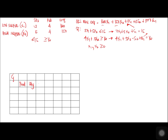For the first simplex table, the columns are Cj, Basis, Quantity, X1, X2, S1, S2, and A1, with objective row values 160, 150, 0, 0, 1000. The basis variables are S1 (Cj = 0) and A1 (Cj = 1000), with quantities 15 and 16. The constraint coefficients are: for S1 row — 3, 5, 1, 0, 0; for A1 row — 4, 4, 0, −1, 1.